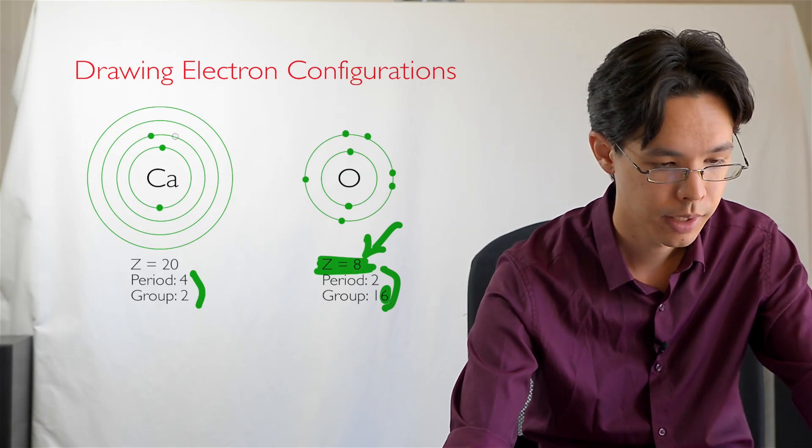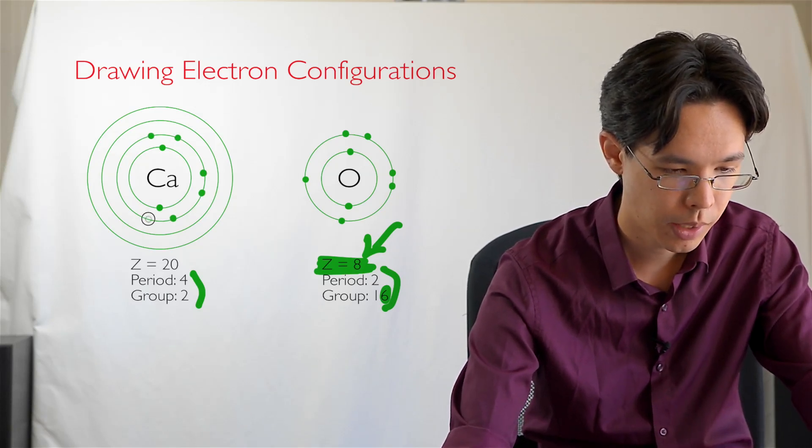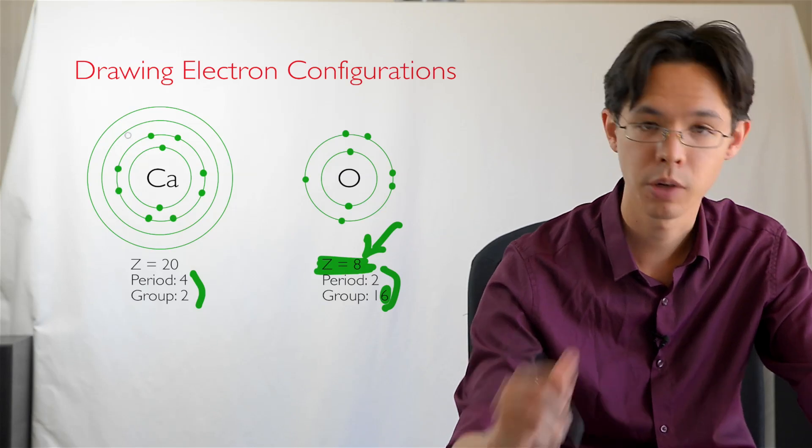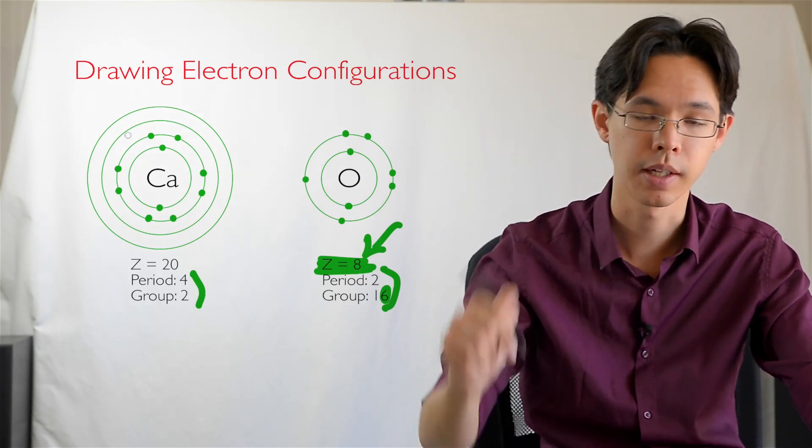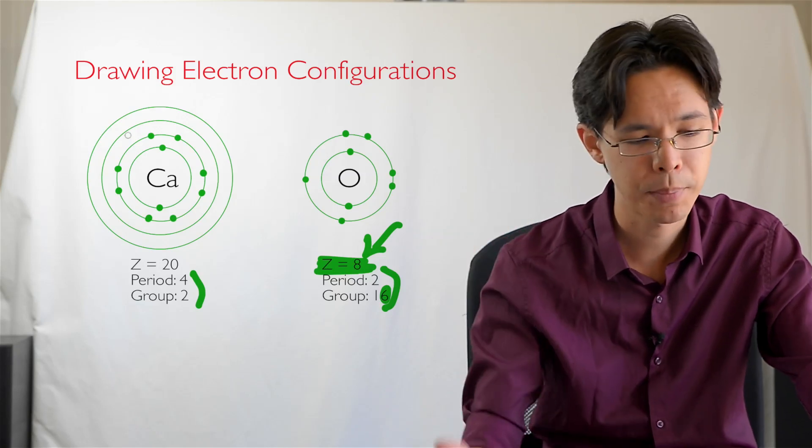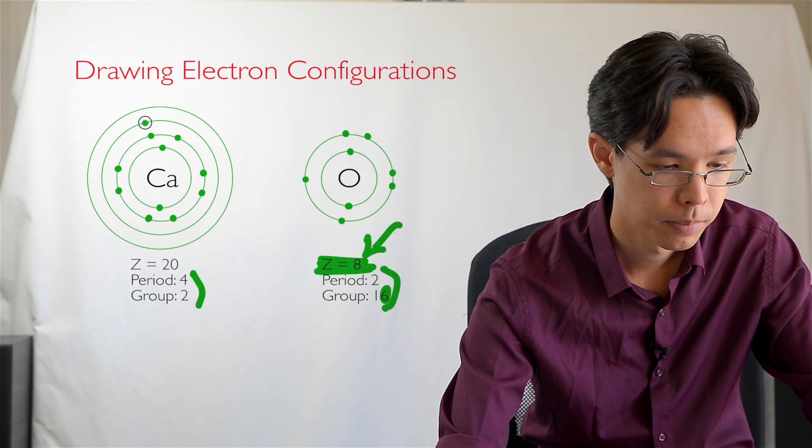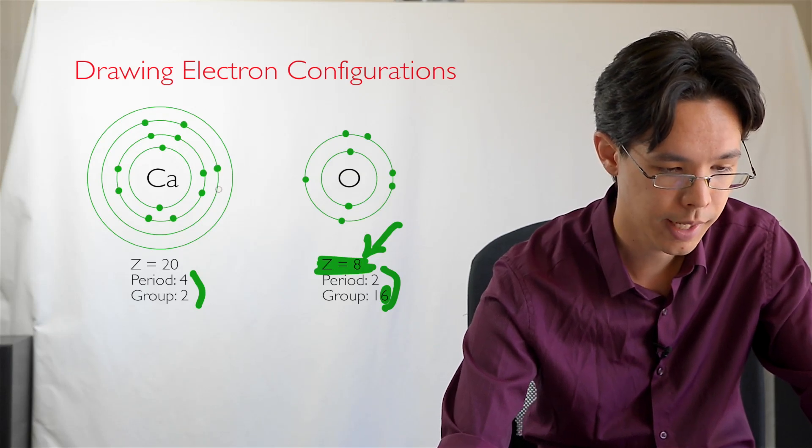So I know that the inside shell has a maximum of two electrons. The next shell, it will have eight electrons. Now I know in the previous example, I went around the edges of the circle as if it was a box before I started pairing them up, but I happen to know that this one is full, so I'm just going to double them up as I go around anyway. And the next one also can fit eight.